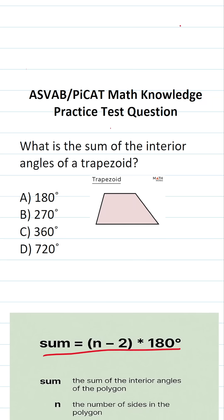The sum of the interior angles of any polygon is going to be n minus 2 times 180, where n refers to the number of sides in the polygon. Well, as it happens, a trapezoid is a quadrilateral.